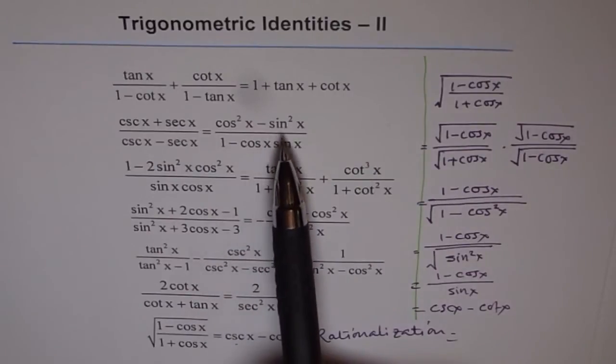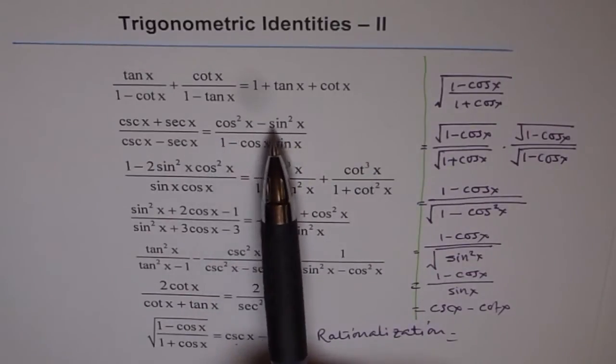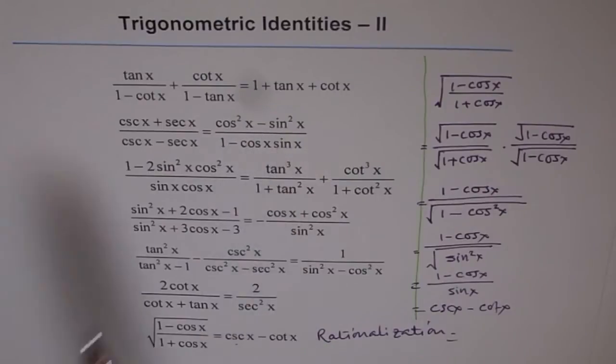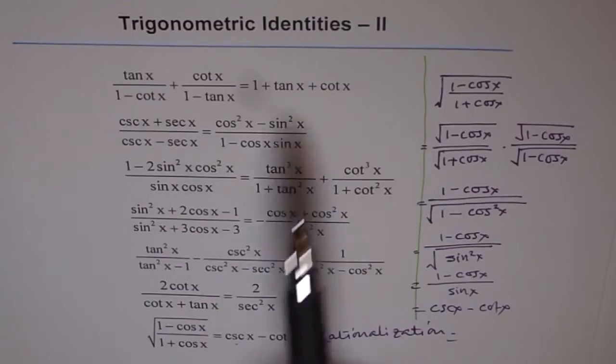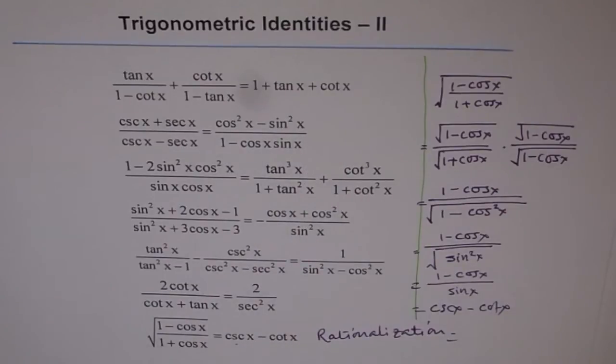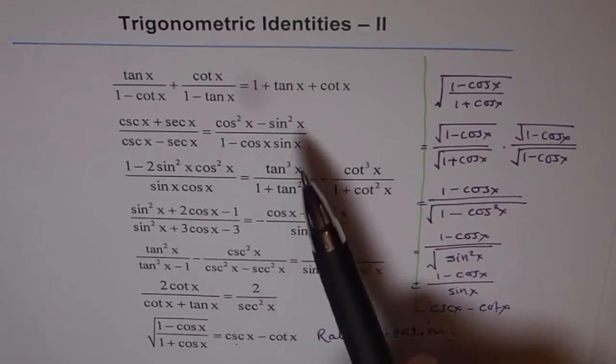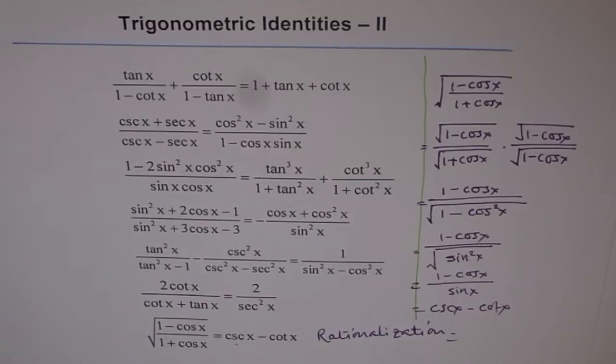Now, this one is very simple. This is difference of squares. Cos square x minus sin square x. It could be written as cos x plus sin x times cos x minus sin x. So, that could be utilized here. So, there are ways to solve all these identities.